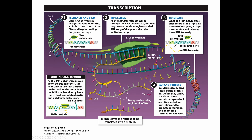Step one: recognize and bind. RNA polymerase, an enzyme that builds RNA, recognizes a specific promoter site which serves as a start point, then binds to the DNA molecule. RNA polymerase reads the DNA molecule and builds a single-stranded RNA copy called the mRNA transcript. It looks at each base and adds the complementary base: so if the DNA has A, T, C, and G, the mRNA would have U, A, G, and C.